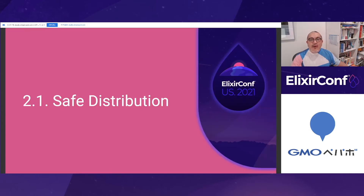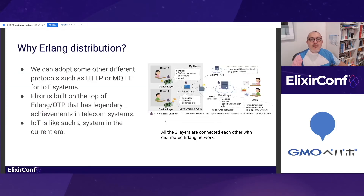Then, we'll look into the details of what the Platypad framework provides. The first one is Erlang distribution. For IoT systems in Elixir, we can choose HTTP, MQTT, or some other protocols. Here, we adopt the good old distributed Erlang protocol. If not, building IoT systems in Elixir is not always a good choice, I think.